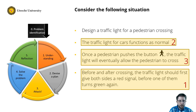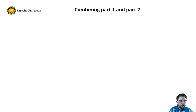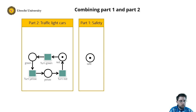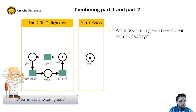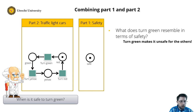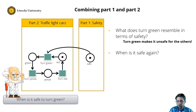So we have now a model for all three parts — let's combine them. First we have part 1 modeling safety, and we have part 2 the traffic light for cars. When is it safe to turn green for the cars? We need to ask ourselves what does turning green resemble in terms of part 1. Turning green makes it unsafe for the other lights to change color. In part 1 we modeled this as a place containing a token if it is safe. Hence we add an arc from place safe to transition turn green — so turning green means consuming a token from place safe. And of course it is safe again when the traffic light turns red, so we add an arc from transition turn red to place safe.